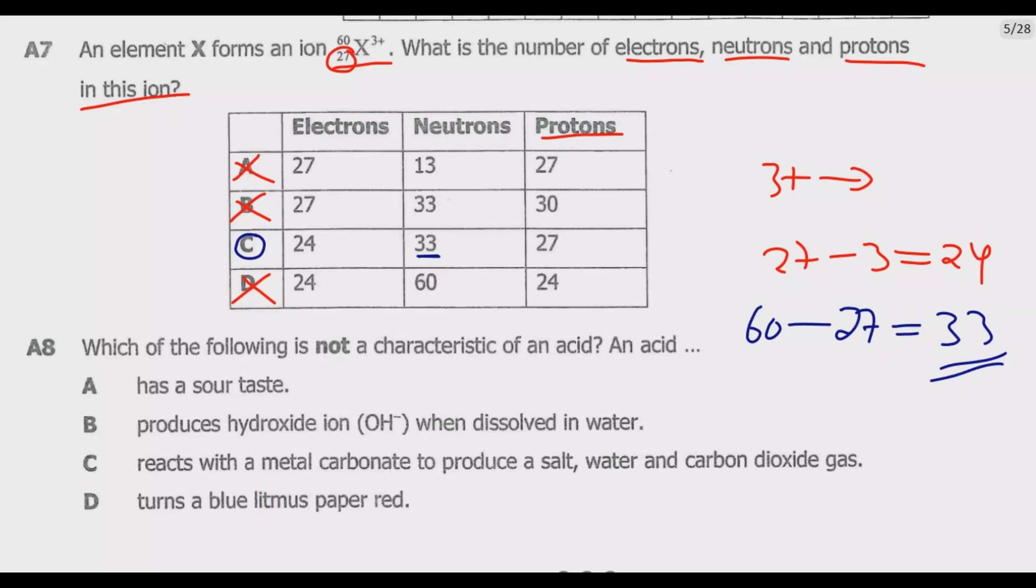Question A8: Which of the following is not a characteristic of an acid? So which one is not a characteristic of an acid? A - has a sour taste. This is one of the characteristics. B - produces hydroxide ion (OH⁻) when dissolved in water. This is incorrect. So B should be what is not correct. This is a characteristic of a base, not an acid.